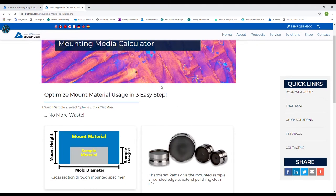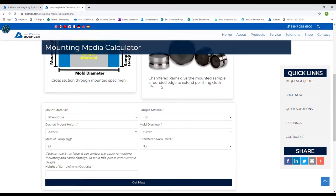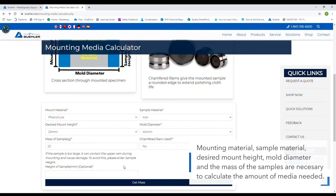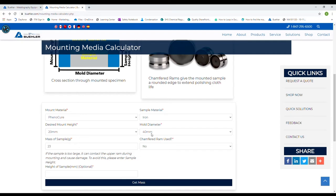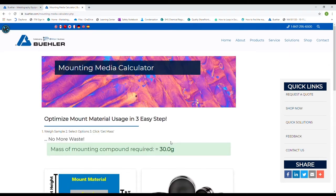Then it'll bring you to this page. Given the right variables, this page can calculate how much media you're going to need to get a specific height or amount. This is important because if you put too much media in the mounting chamber, it can mess up the SimpleMet 4000. For my specific parts, I need 30 grams of phenocure to mount the sample and get a 20 millimeter height. This is a really handy tool if you want to do a duplex mount.